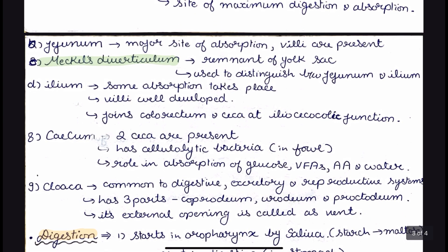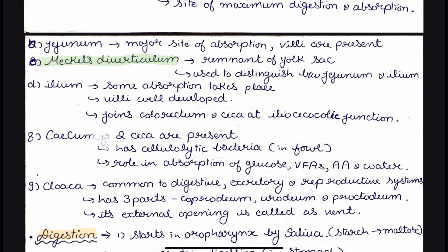In case of birds, a proper division between the ceca, colon, and rectum is not present. The ceca are individual structures, but the colon and rectum form a combined structure. There are two ceca present. The ceca have cellulolytic bacteria in the case of fowl and have a role in absorption of glucose, volatile fatty acids, amino acids, and water. In case of birds of prey like owls, eagles, and kites, the cecum is absent.